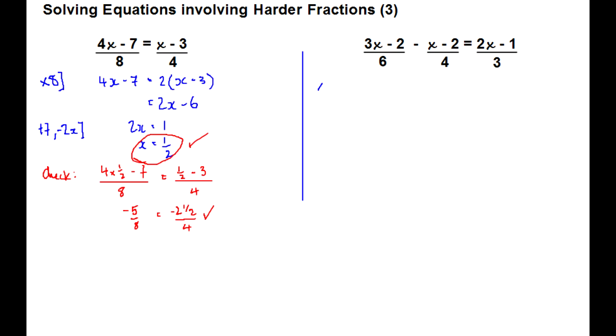Okay, second example. The lowest common multiple of 6, 4 and 3 is 12. So we're going to multiply every term by 12. So the first term is 12 times 3x minus 2 divided by 6, which is just 2 lots of 3x minus 2. And then we've got 12 lots of x minus 2 divided by 4, so we've just got minus 3 lots of x minus 2. And then 12 divided by 3 is 4 times 2x minus 1.